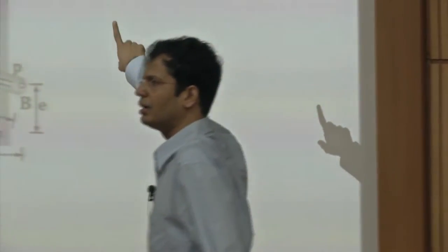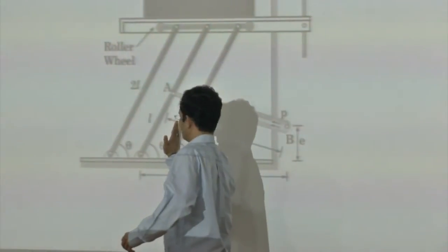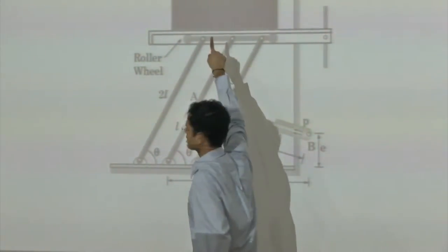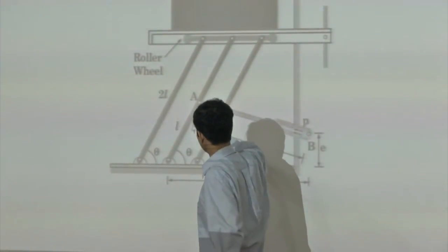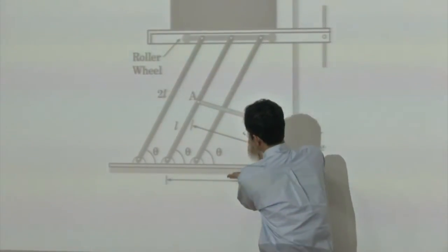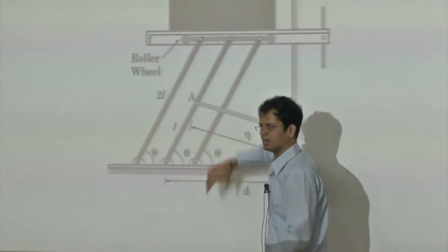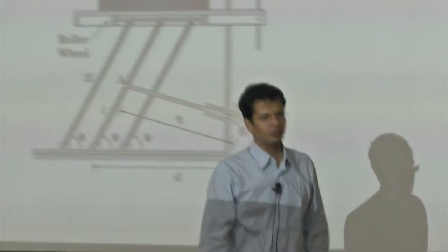So the work done by gravity will be minus W times that displacement, or if you reduce theta it will be plus W. We know the vertical displacement of the platform: if this rod is rotated by small amount delta theta, this entire assembly will go up by delta theta times 2L cos theta. Now, how do we find out what is the work done by the hydraulic cylinder?